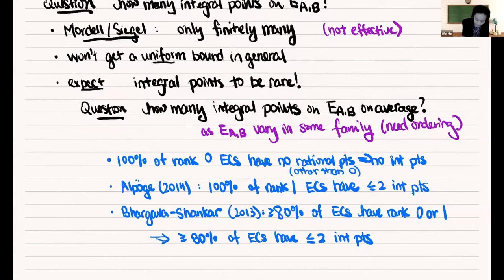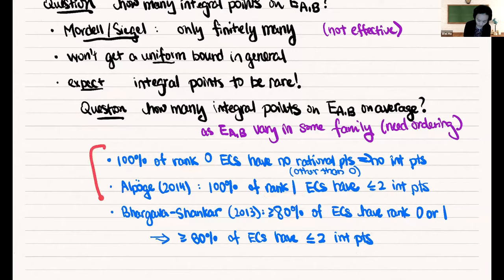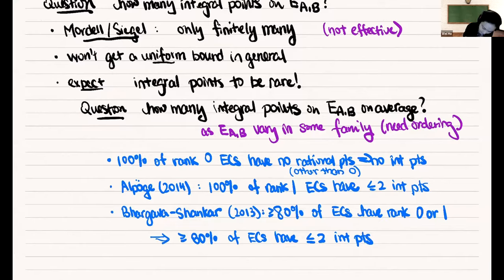Most people believe that 100% of elliptic curves have rank zero or one, which should mean 100% of all elliptic curves have no integral points whatsoever.